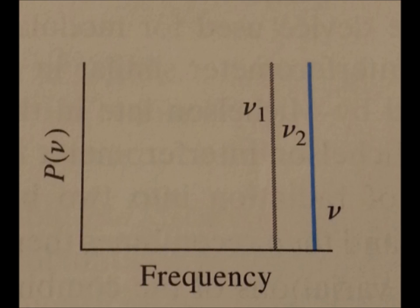Frequency domain spectroscopy relates the incident frequency or inverse wavelength of radiation to the power output. Conversely, time domain spectroscopy, which FTIR spectroscopy operates upon, measures the radiant power as a function of time.